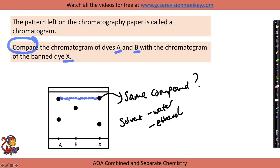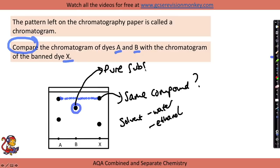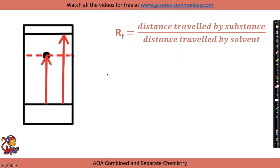If the compound in A matches X across different solvents, it's highly likely it contains the banned compound. In different solvents, different compounds spend different amounts of time in the mobile and stationary phases, giving different RF values. The bottom colour of dye A does not match dye X. Dye B has only one colour and it doesn't match X at all — and because dye B has only one colour, this tells us dye B is a pure substance, containing only one compound.